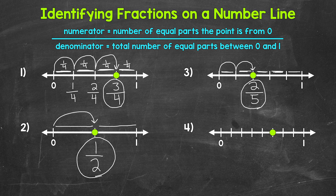Let's label the rest of this number line. We start with zero fifths, then one fifth, two fifths, three fifths, four fifths, and then five fifths is one whole.